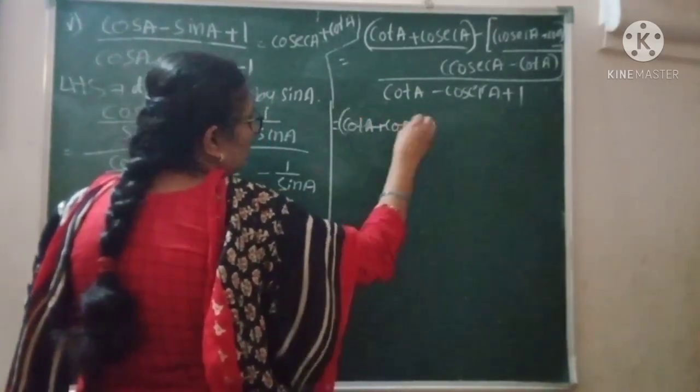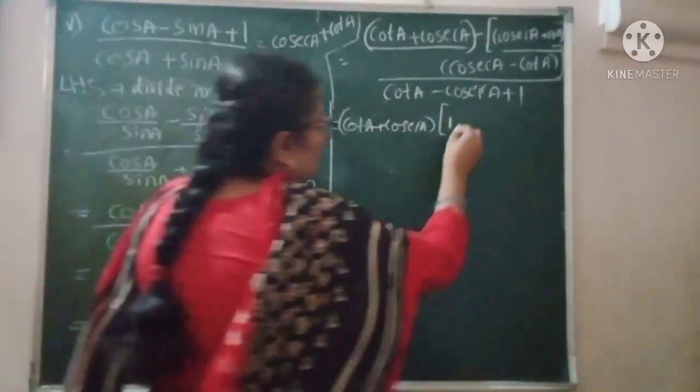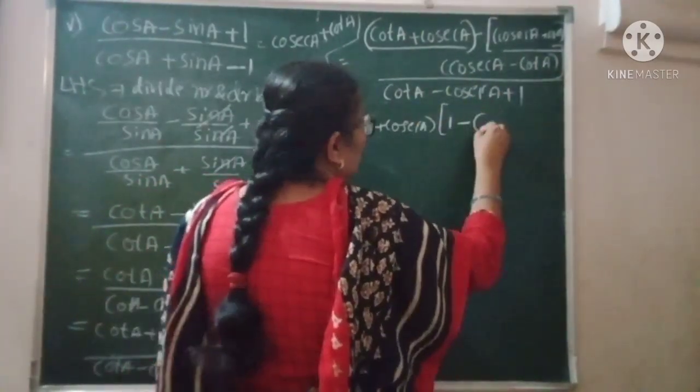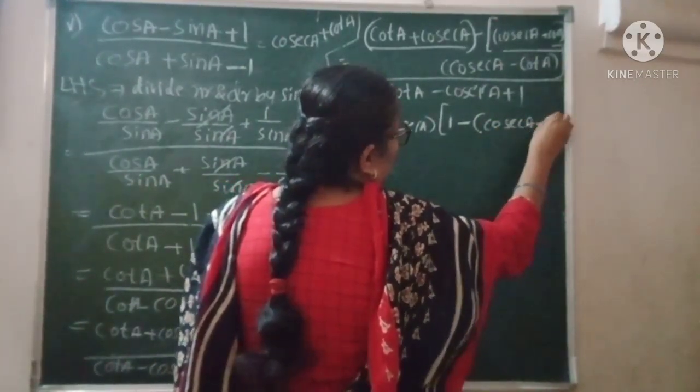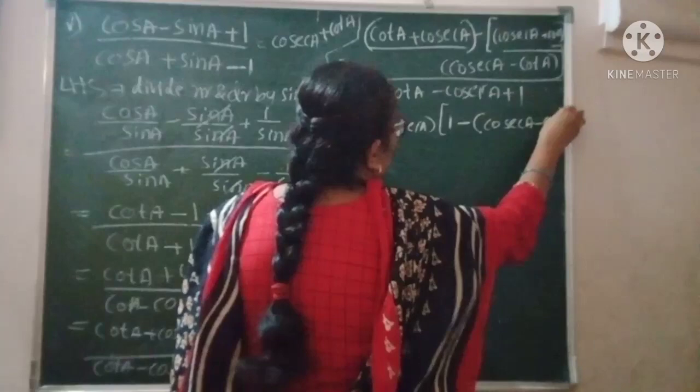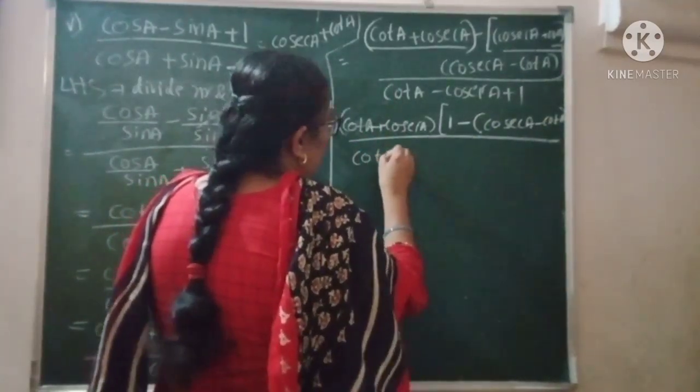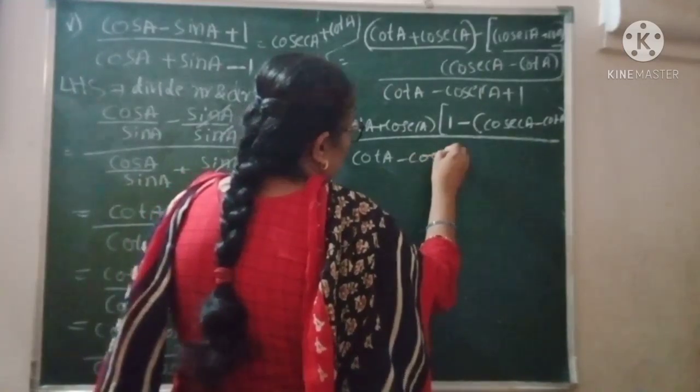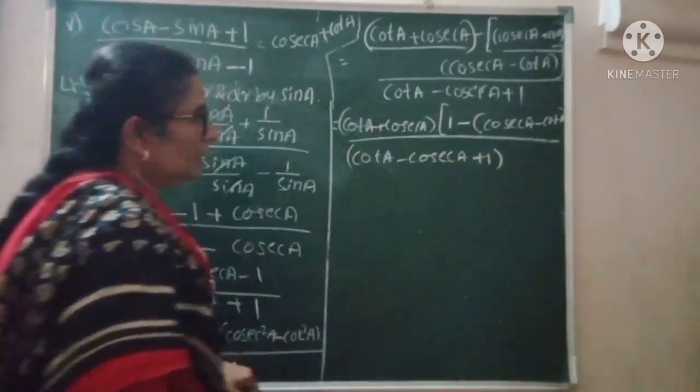One minus cosec A minus cot A, divided by cot A minus cosec A plus 1.